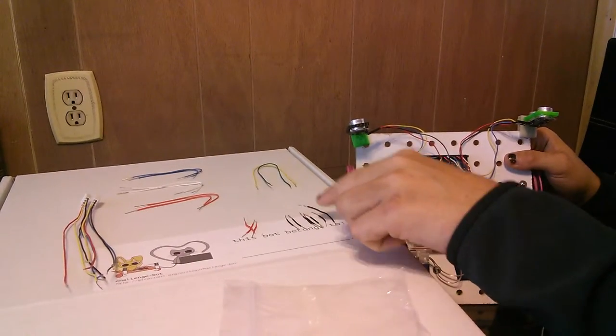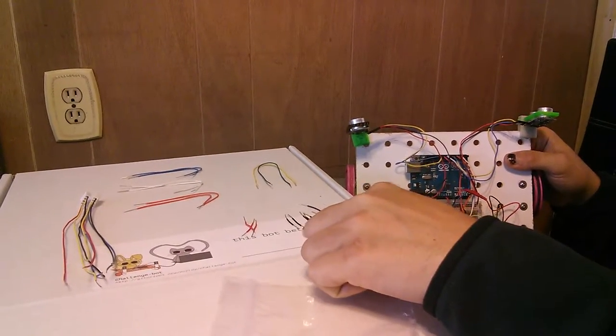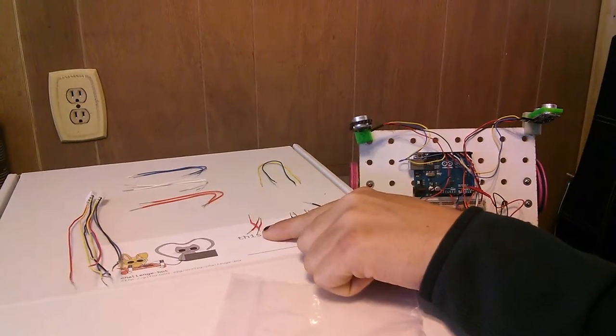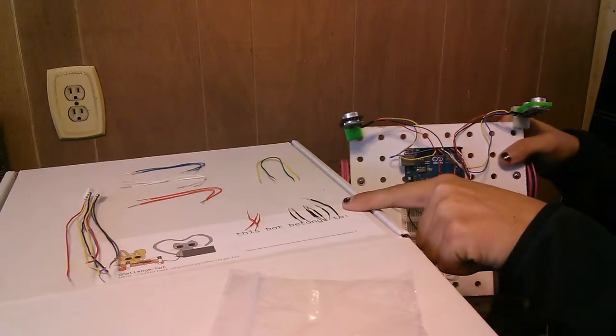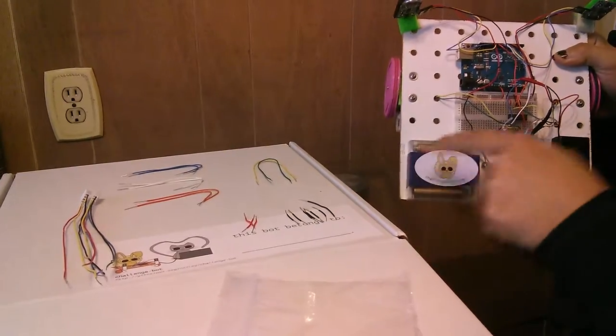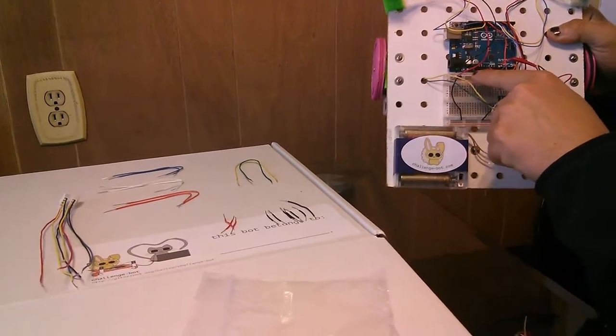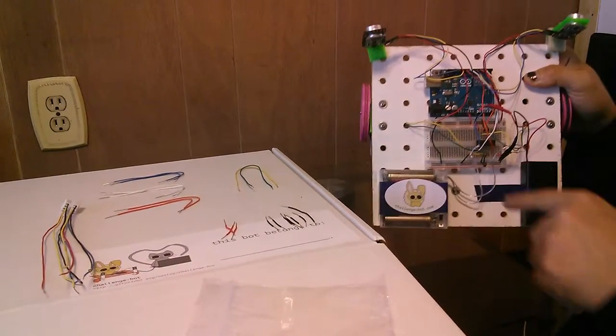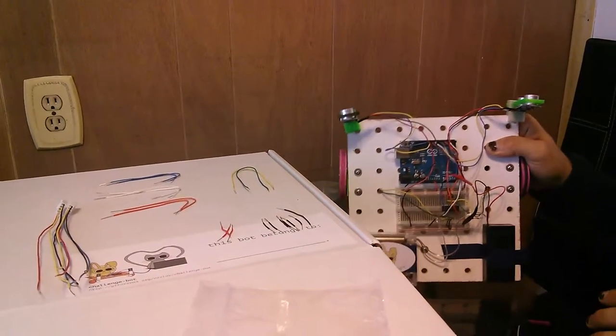Then we have the black wires which are for ground and the red wires which are for power. The longest black wire goes from one end of the breadboard to the other and it connects the ground rails to each other. We'll go over this in more detail later.